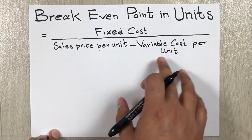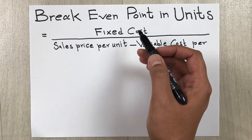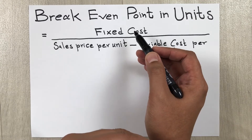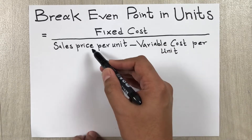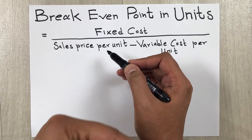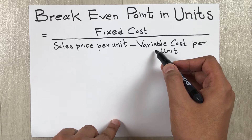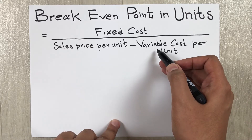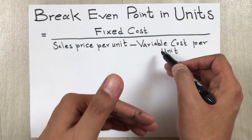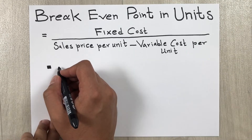I will explain these three terms one by one. Fixed cost does not change — examples of fixed cost are rent, utilities, and machinery. Sales price per unit is the price of one unit that a company charges the customer. Variable cost changes according to production or sales — examples are labor wages and raw material.